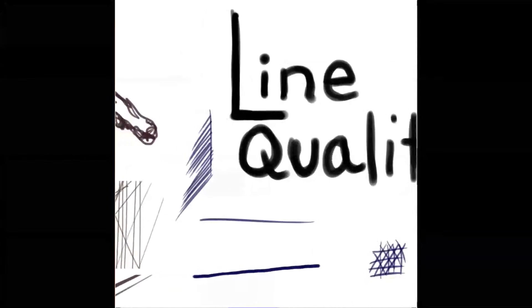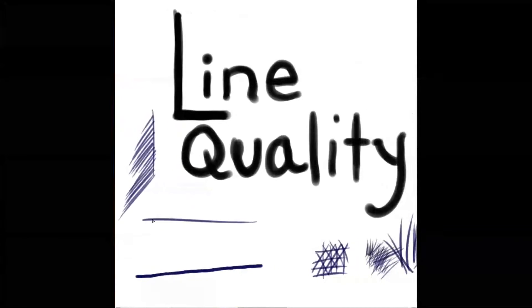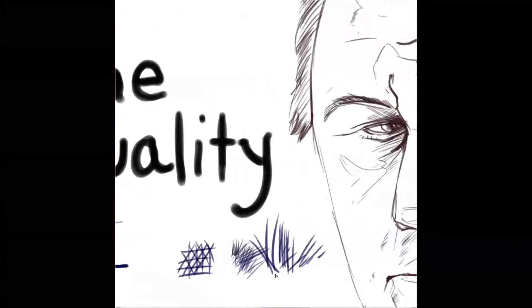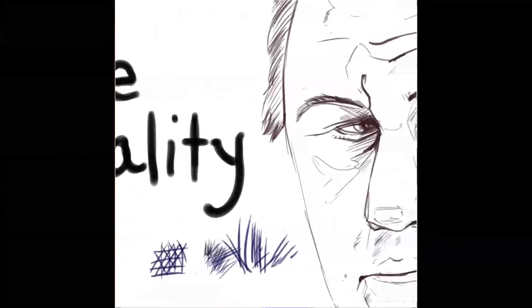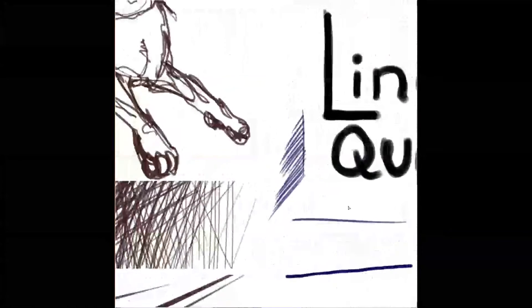First, just a regular straight line. Cross hatching - using the pen to drag strokes to create a furry look, the ability to create value.